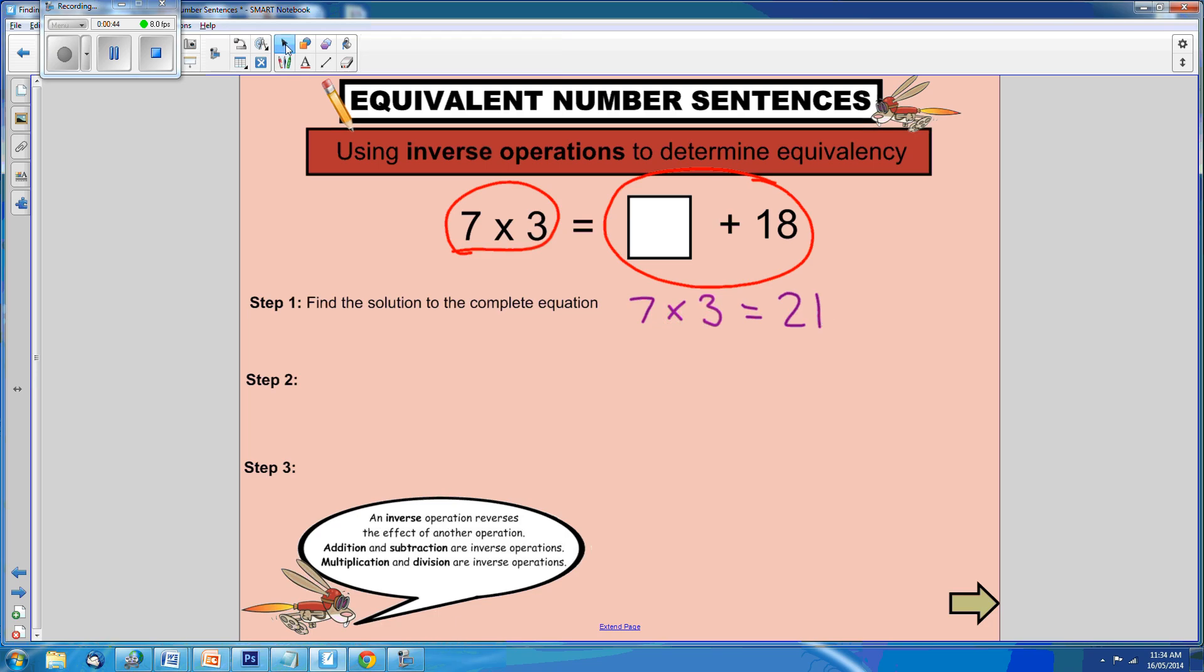Step 2: We need to rewrite the incomplete equation with the solution from step 1. So we're trying to find what plus 18 equals 21.